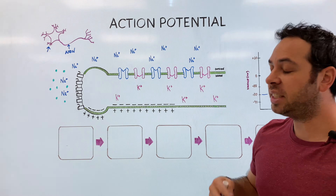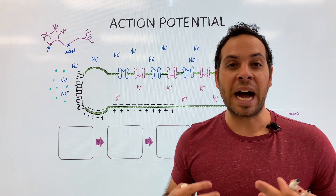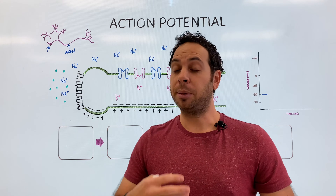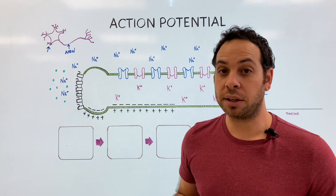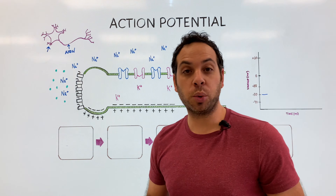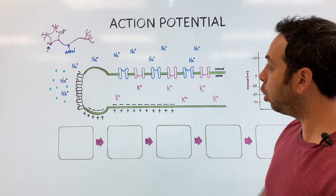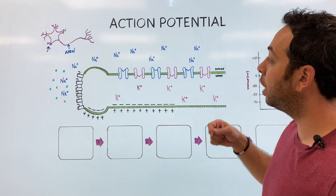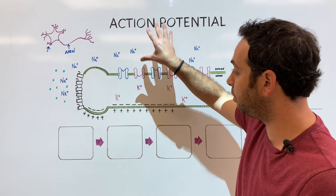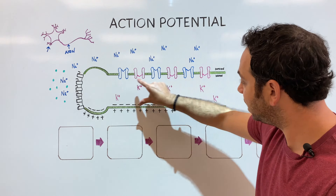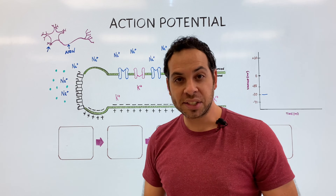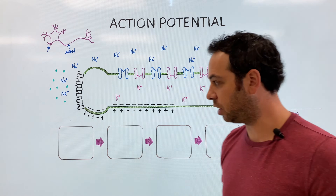Another thing to pay attention to is that a neuron is surrounded by ions — charged particles or molecules, some negative and some positive. When referring to a neuron, there are two that are really important: sodium and potassium. There's a high concentration of positively charged sodium ions that sit outside the neuron, and on the inside you have a higher concentration of positively charged potassium ions.